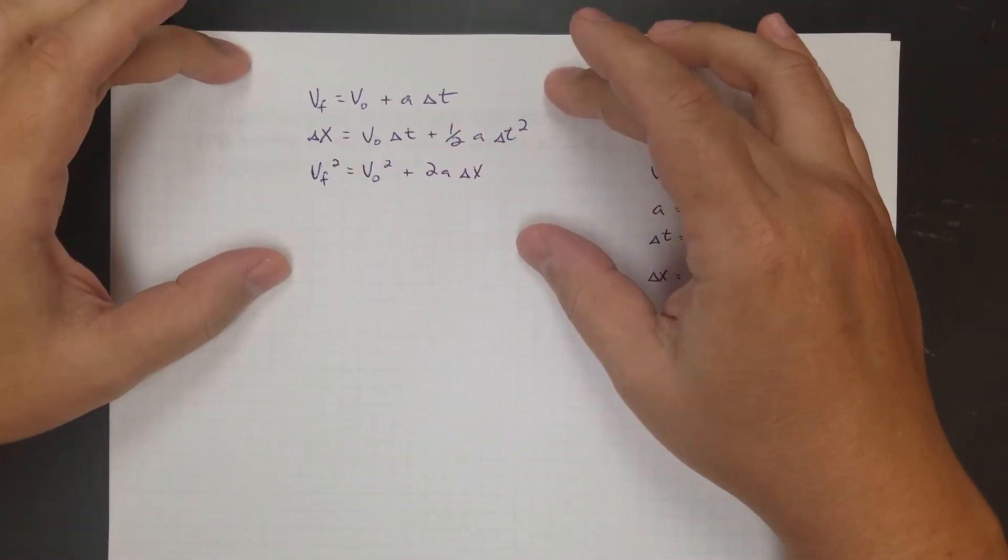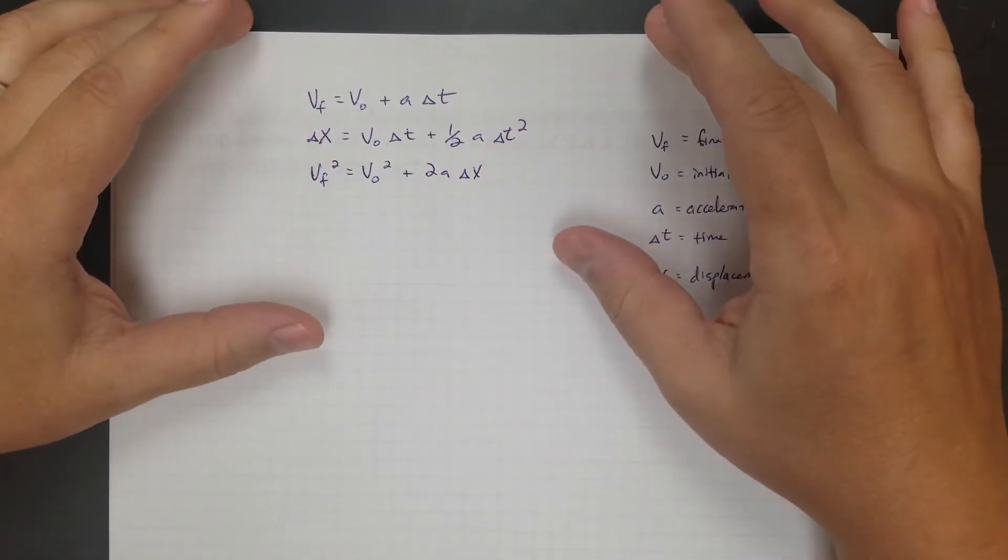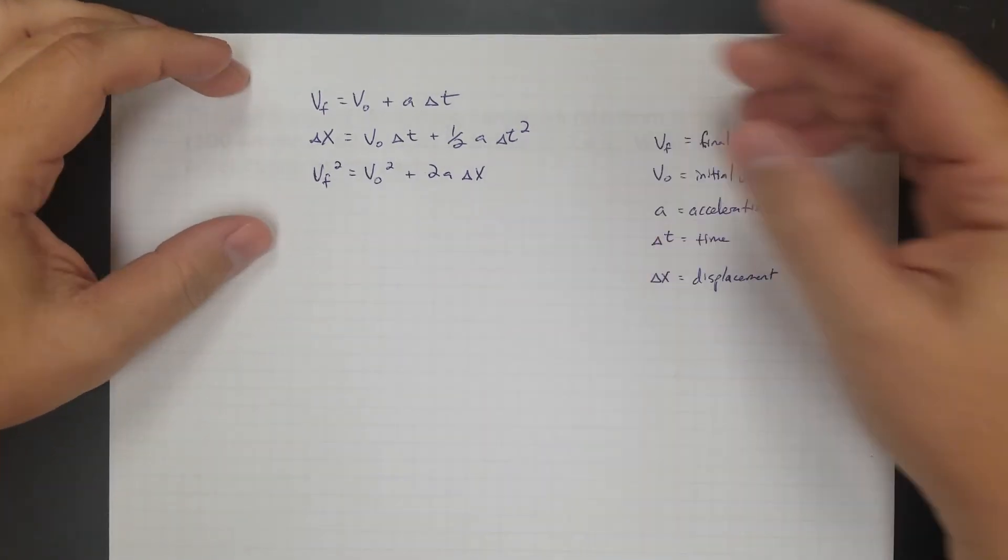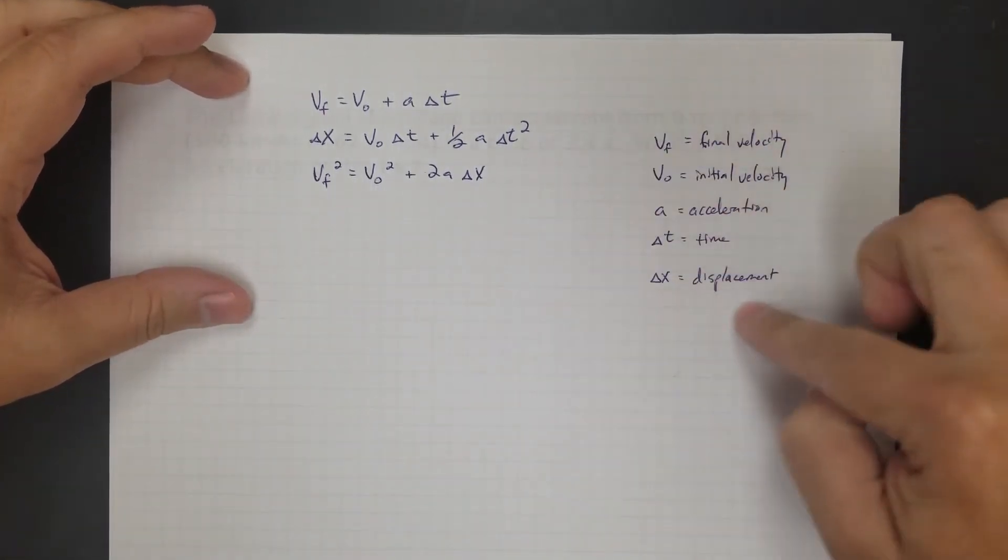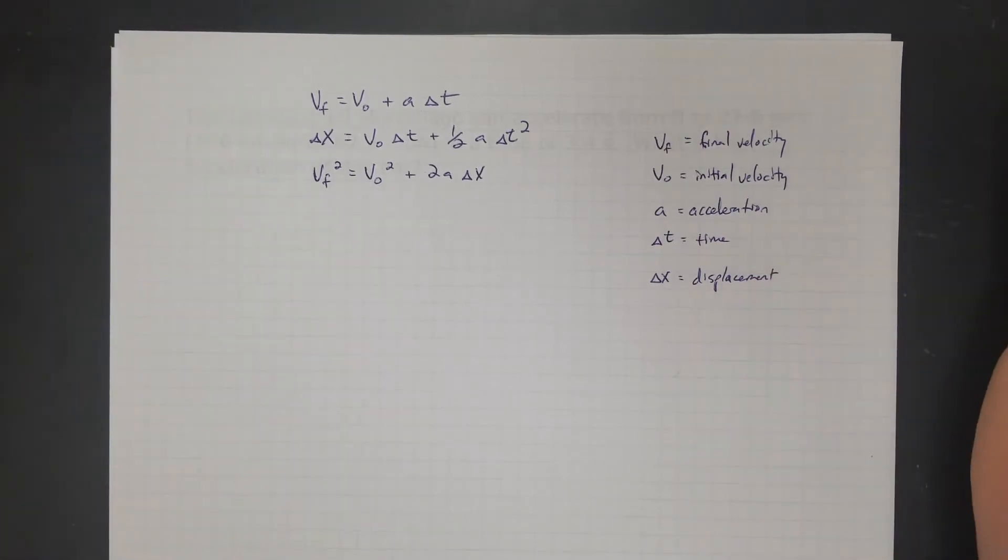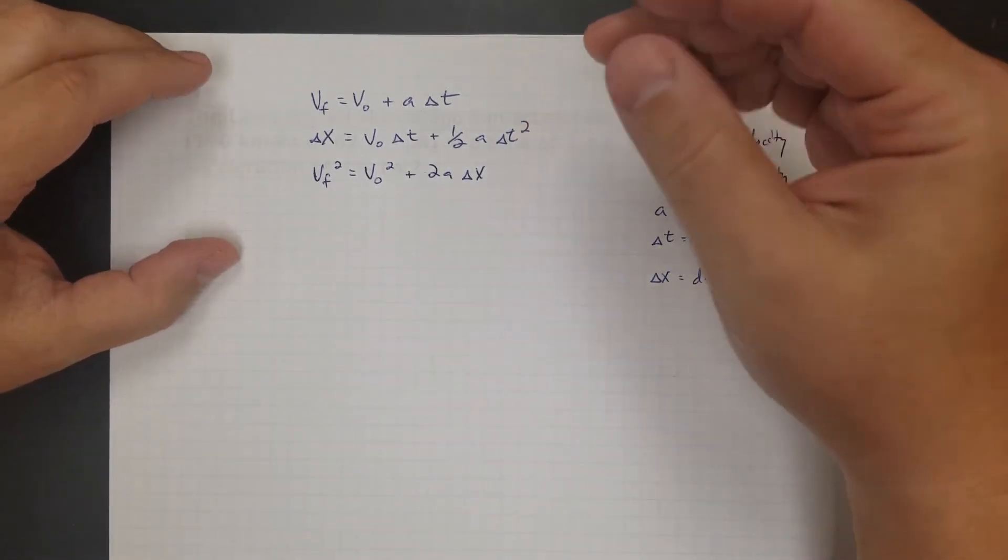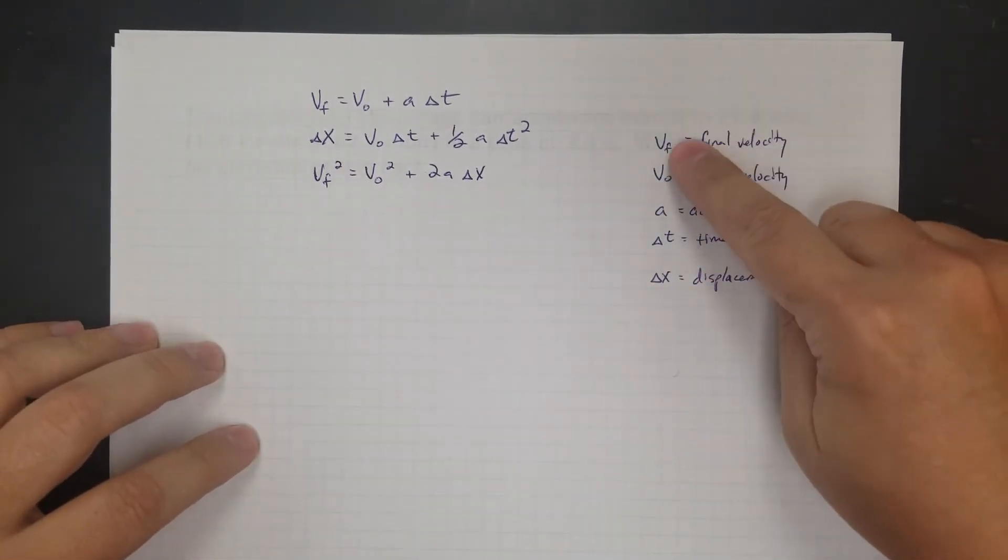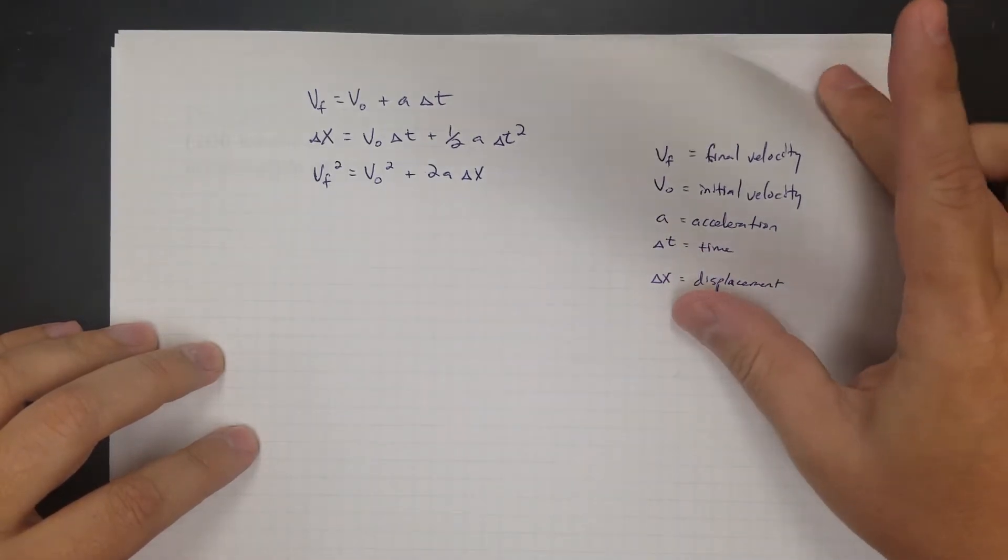Here are our three kinematics equations that we've talked about, and we're going to practice using these to solve some problems. Why we have three kinematics equations is because we have all these variables over here that could either be known or unknown, and you need multiple equations to be able to solve in case you don't know one of these. Our variables are final velocity, initial velocity, acceleration, time interval, and displacement. Let's practice solving some of these.